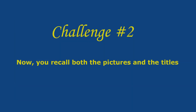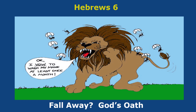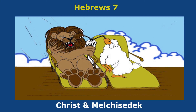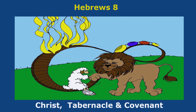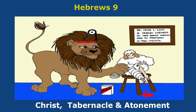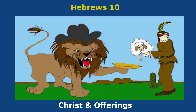Now you're ready for challenge number two. In this one, I'll just give you the numbers — you think of the pictures and then state the titles. What's the title of chapter 6? Chapter 6 is Fall Away, God's Oath. What's chapter 7 about? Chapter 7 is Christ and Melchizedek. What's the title of chapter 8? Chapter 8 is Christ, Tabernacle, and Covenant. What's in chapter 9? Chapter 9 is Christ, Tabernacle, and Atonement. What's in chapter 10? Chapter 10 is Christ and Offerings.